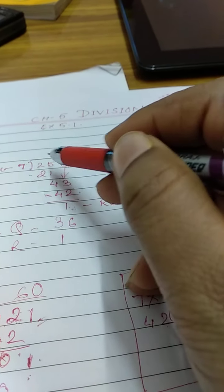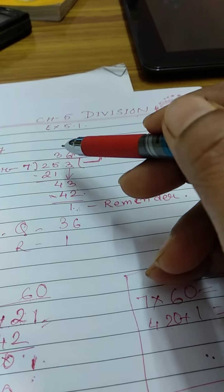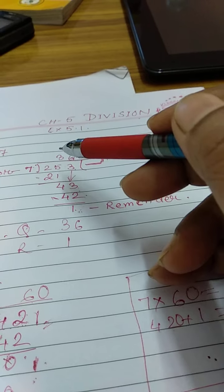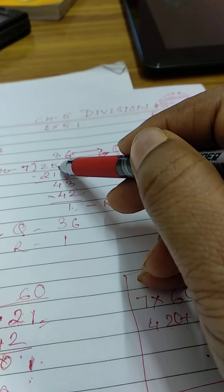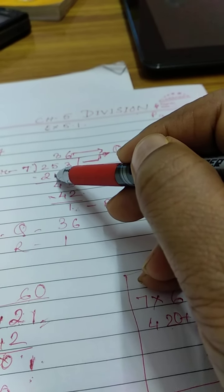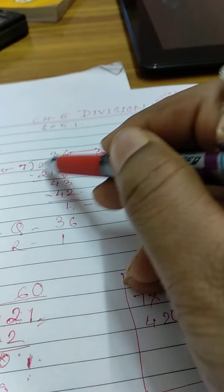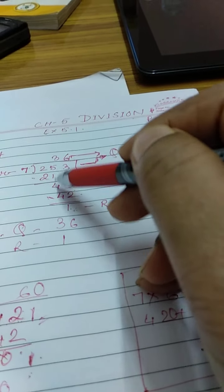Now for example 7. We will take a multiple of 7. 7 times 1 is 7, 7 times 2 is 14, 7 times 3 is 21, 7 times 4 is 28. So 28 is more than 25. So I will write something less than 4, that is 3 times 21. Now after this we are doing subtraction.